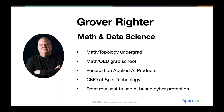My name is Grover Reiter. I'm a mathematician and a data scientist. I was originally a math topology undergrad, and I did math and quantum electrodynamics in grad school. For anybody that feels mildly intimidated by that — don't. I'm a plumber. I deal with mathematics as applied to modern business problems. I'm very focused on applied artificial intelligence and machine learning. I'm the chief marketing officer here at Spin Technology, and it's typical of companies like Spin that we have very technical people even working in marketing and sales. In this role, I get a front row seat to see what's happening with AI-based cyber protection.